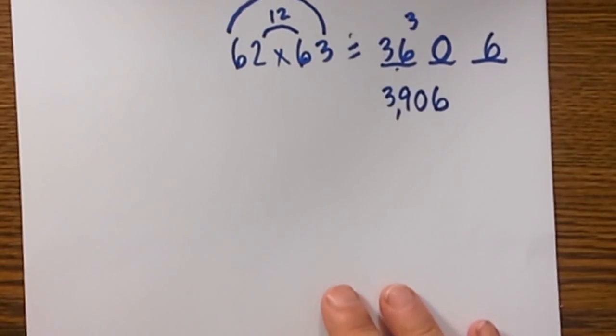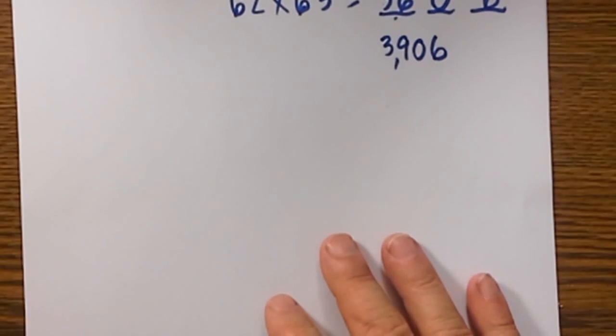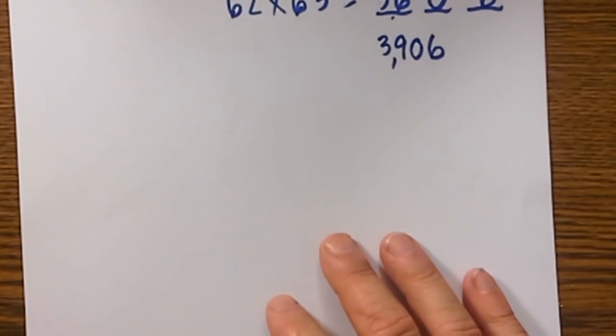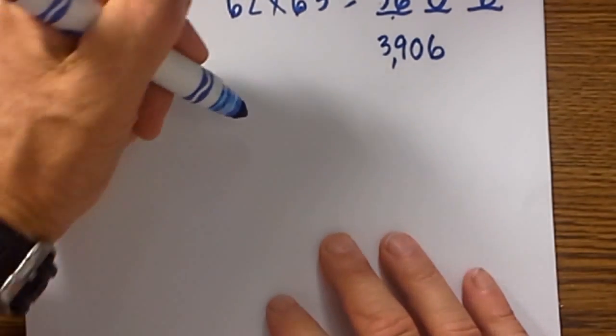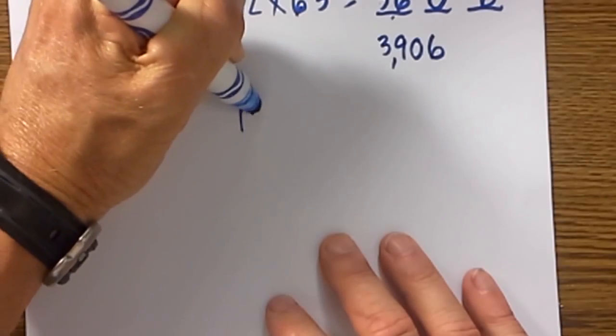So you can begin to see I find it pretty easy multiplying multi digit numbers. Let's go with this example.